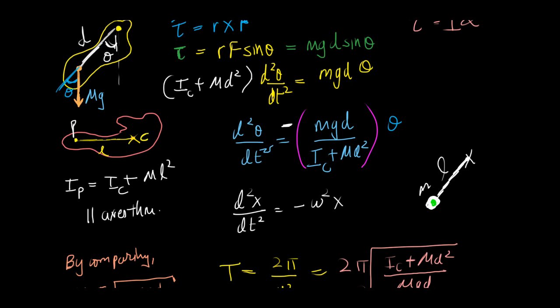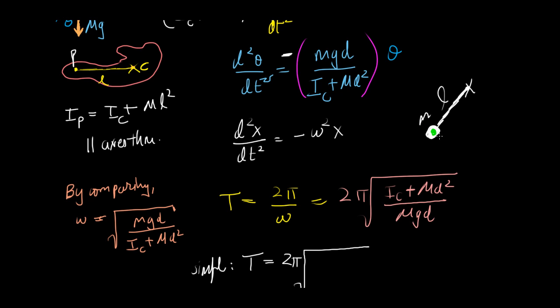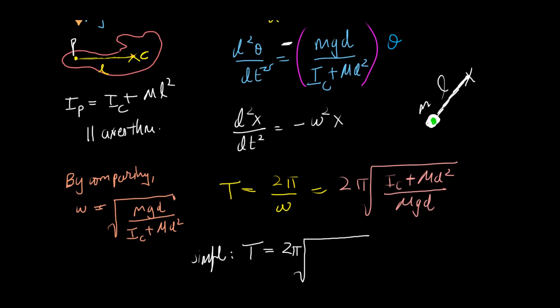And only if that is, that is only if this particle is a point mass. And in a simple pendulum we assume that it is point mass, so I about c will become zero.